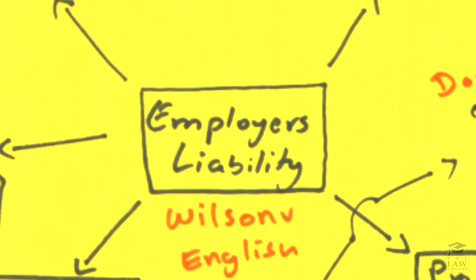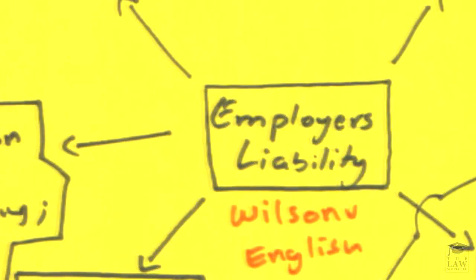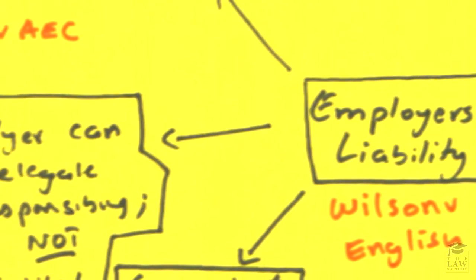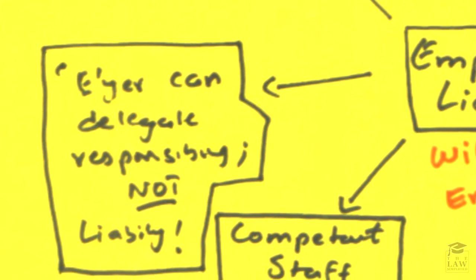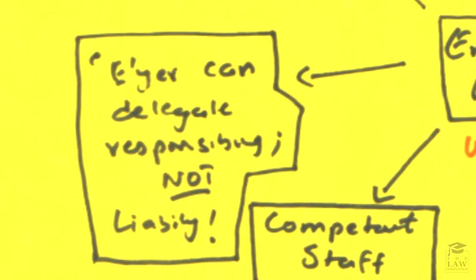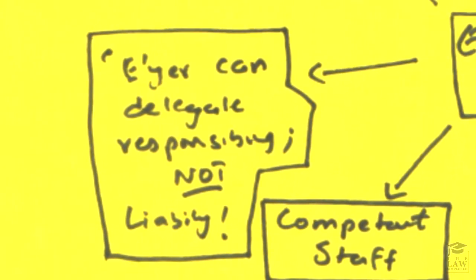Now, in Wilson and English, we see these components outlined. The whole premise of employer's liability revolves around the fact that an employer can delegate responsibilities, but not liability. So we'll look at each component in turn.